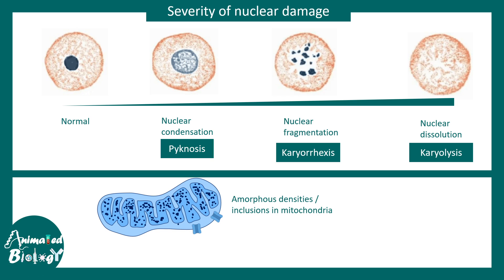Mitochondrial function is severely compromised in irreversible injury. There are amorphous densities and inclusion bodies found in mitochondria. The mitochondrial permeability transition pore complex, or MPTP, leads to several substances leaking into the cytosol. The mitochondrial membrane potential — essential for ATP production and the electron transport chain — is lost or dissipated, which is why ATP production is highly compromised.